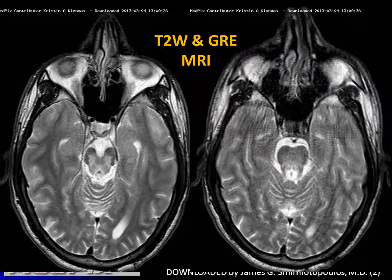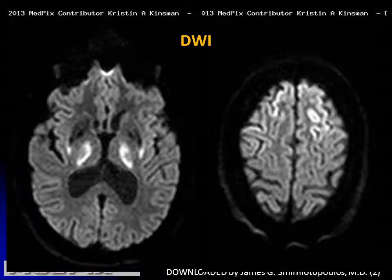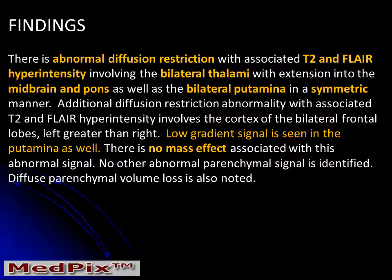He had these abnormal MR images on T2 and GRE. We can also see abnormalities involving the thalamus and the lateral portion of the lenticular nuclei, the putamen. He also had diffusion abnormalities involving the cortex and the thalamus bilaterally. In summary, this patient had abnormal diffusion and abnormal T2 and FLAIR hyperintensity patterns involving bilateral thalamus, the midbrain and pons, bilateral putamina, in a symmetric pattern with no mass effect whatsoever.